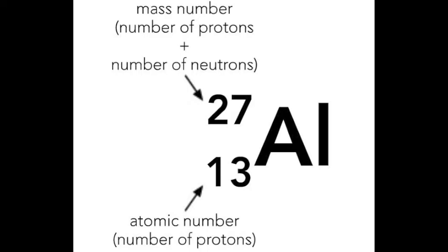This information can be used to calculate the number of protons, neutrons, and electrons in an atom. For example, in aluminum there are 13 protons because the atomic number is 13, 27 minus 13 equals 14 neutrons, and 13 electrons, the same as the number of protons.